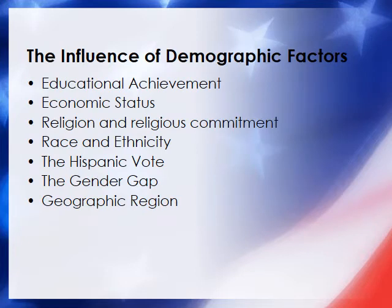There is a measurable influence of demographic factors on voting behavior and ideology. Historically, Republicans did better with college-educated voters, but this changed in 2016 when President Trump did better with less-educated voters. Economic status has also been predictive — Republicans historically did better with higher socioeconomic status voters, Democrats with lower. This too shifted in 2016, with Trump performing well among lower-income voters, particularly in rural America.